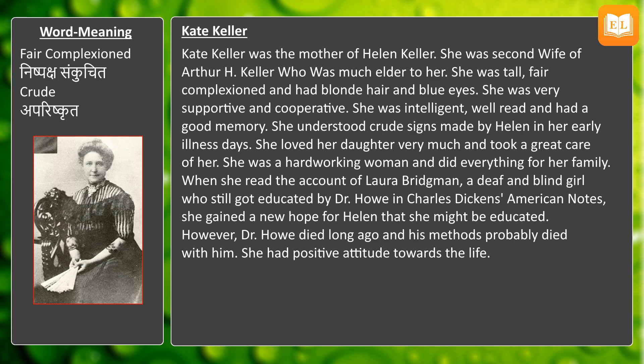She also used to go egg hunting in the long grass with Helen. Kate Keller was the mother of Helen Keller. She was the second wife of Arthur H. Keller, who was much elder to her. She was tall with a fair complexion, blonde hair, and blue eyes. She was very supportive and cooperative, intelligent, well-read, and had a good memory. She understood the crude signs made by Helen in her early illness days and loved her daughter very much.